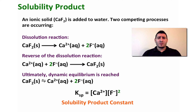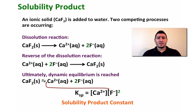Since the reactants are at the solid state, the ionic solid is not included in the expression of the Ksp. Looking at this expression, the power of Ca²⁺ is one and the power of F⁻ is two, and both are taken from the stoichiometric coefficients of the equilibrium.